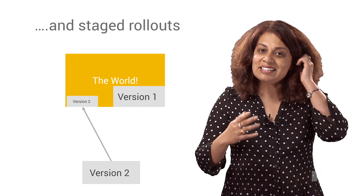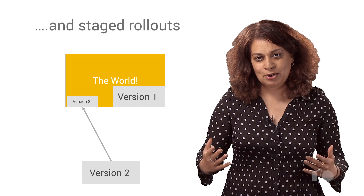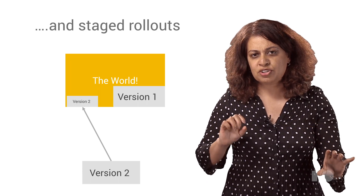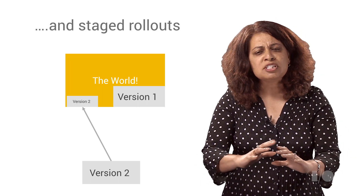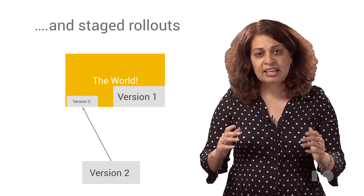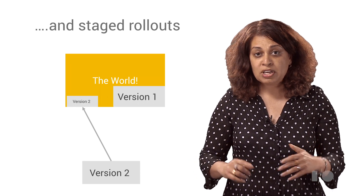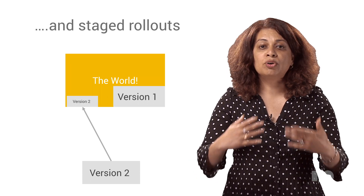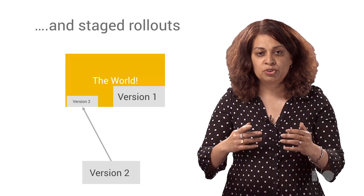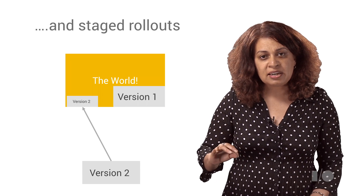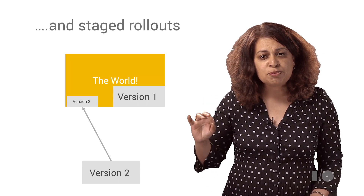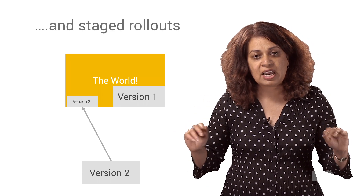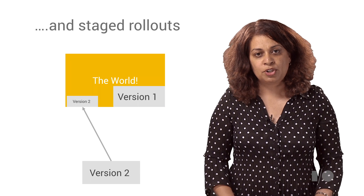Also, consider using staged rollouts in Google Play to gradually push new features and updates to a small percentage of the user base and get their feedback. If your rating stays the same, great — roll it out to more users and repeat. This helps you catch problems early before they can have a huge impact on your ratings.